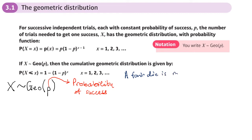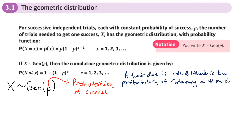For example, here's a question: a fair die is rolled. What is the probability of obtaining a four on the fifth roll? The probability of getting a four is one over six for a fair die, and the probability of not getting a four is five over six.